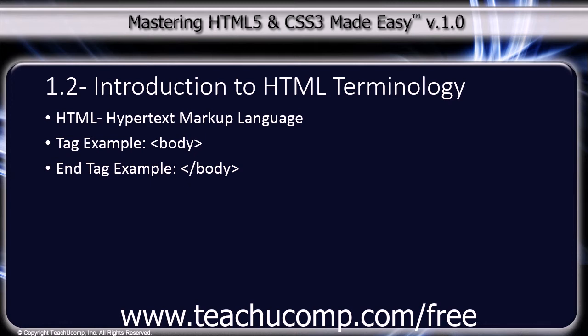Elements are simply the different components or pieces of your web page, like text or images. For example, the body start and end tags are tags that identify the body text on a web page. Once you have identified the element, you can then apply attributes such as color and alignment to the element.